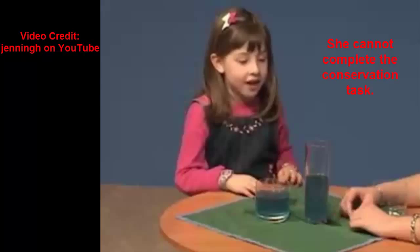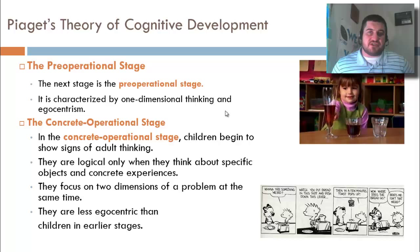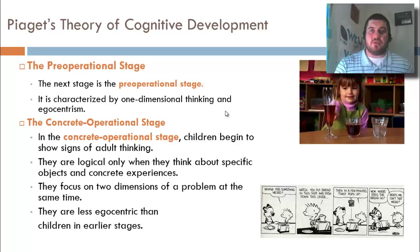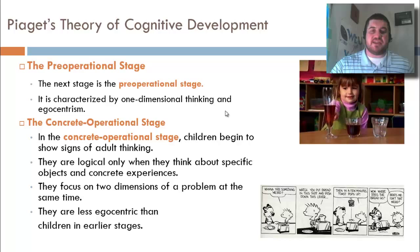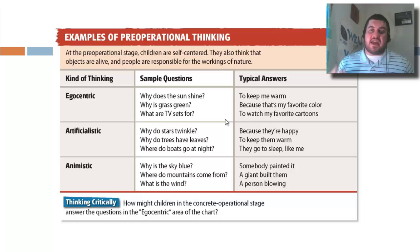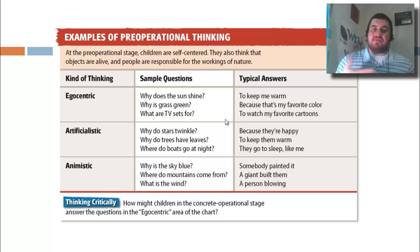In the concrete operational stage, from ages seven to twelve, children begin to show signs of adult thinking. They're logical when thinking about things in front of them and concrete experiences, and they can focus on two dimensions of a problem at a time. They're also less egocentric. Egocentrism means thinking everything has to do with you — why does the sun shine? To keep me warm. Why is the grass green? Because that's my favorite color. Everything revolves around them.